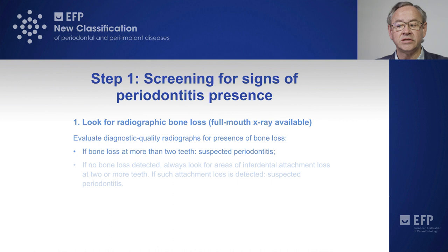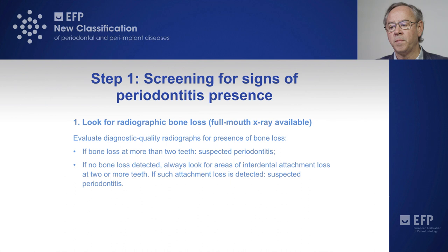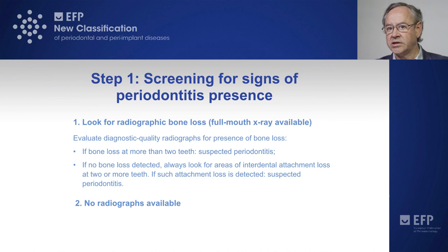If we do not detect any bone loss, then we need to look for areas of interdental attachment loss using a periodontal probe, and we need to assess this evidence at least in two or more teeth. If we are able to detect such attachment loss, then we have again a patient that is suspect of periodontitis.